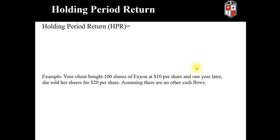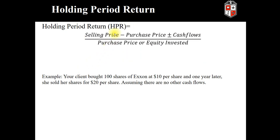Holding period return quite simply means, as the title implies, the return on an investment or an asset that you received while holding the security or the asset. We would take the selling price of an asset minus the purchase price of that asset plus any cash flows from dividends, interest income, or other types of inflows or potentially outflows, divided by the purchase price or the amount of equity invested.